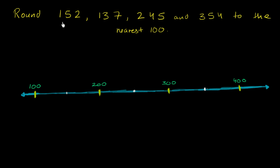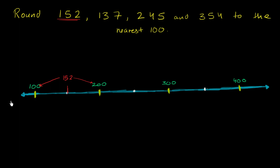And let's start with 152. Where does 152 sit? Halfway in between is 150, and 152 is going to be just to the right of that — right over here. So what are our two options? We might round up to 200, the multiple of 100 above 152, or round down to 100, the multiple of 100 below 152.